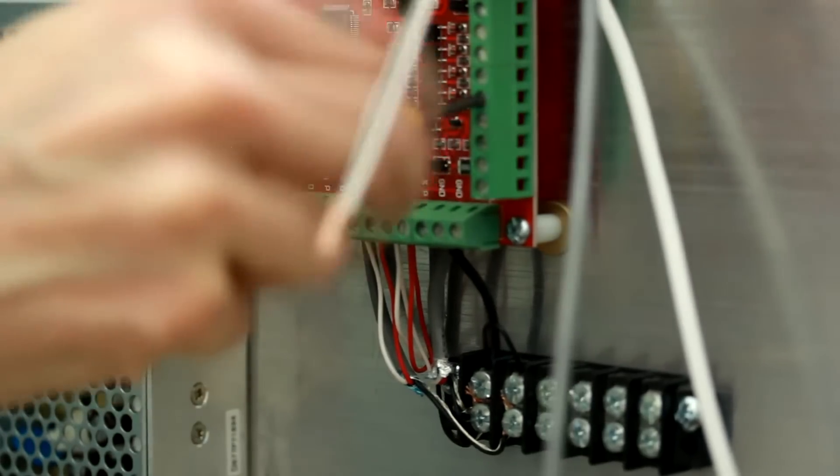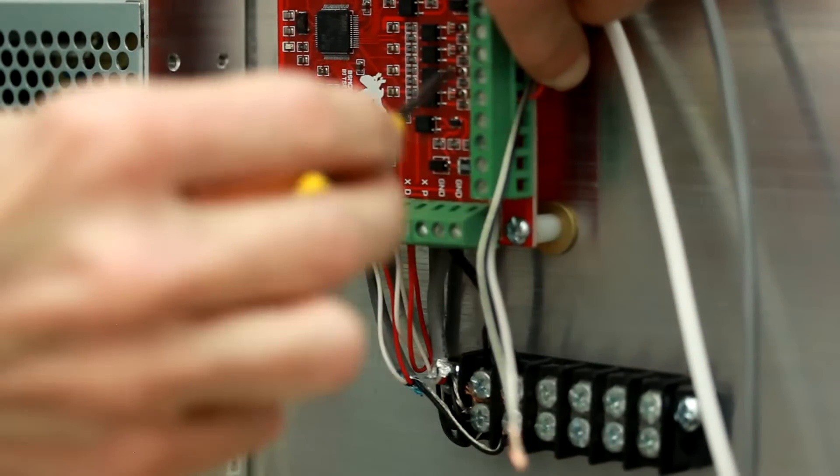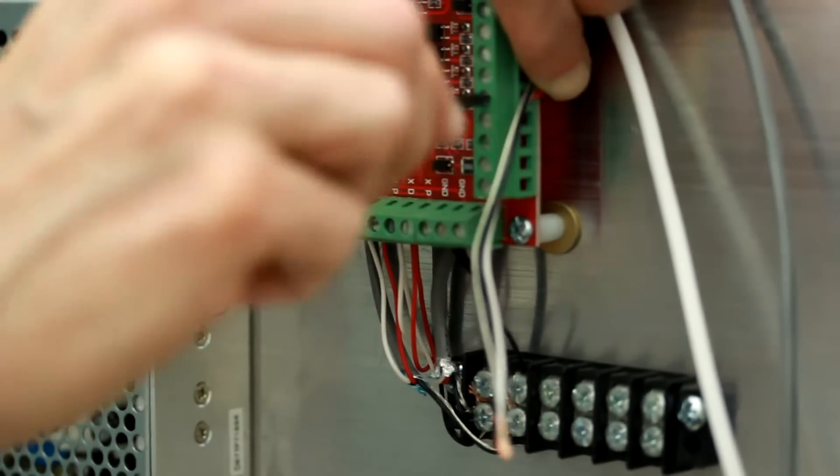I'm connecting the red wire of the switch to the IN1, the IN1, input 1, terminal on the Mach 3 USB controller.